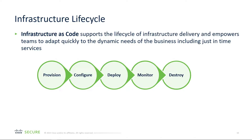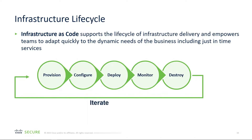We need to configure — installing applications on servers and managing them. Deployment is getting all the processes and services up and running as expected, including initial setup and changes. Monitor ensures the infrastructure is operating as expected and then adjust accordingly. And finally, destroy — scale up as needed, scale down when no longer needing a service. Then we iterate.